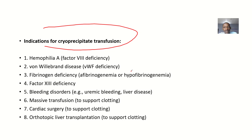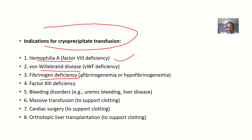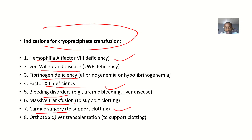Indications for cryoprecipitate transfusion: if the patient has hemophilia, they are deficient in Factor VIII and keep bleeding — you give cryoprecipitate. If they have von Willebrand disease, fibrinogen deficiency, or Factor XIII deficiency, you give it. If they have a bleeding disorder like uremic bleeding or liver disease, give it. For massive transfusion, cardiac surgery, or orthotopic liver transplantation, you give it to support clotting.